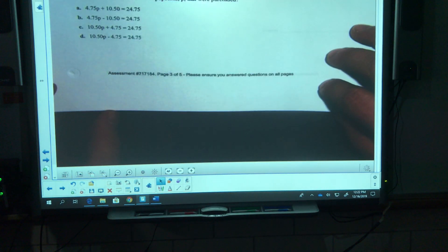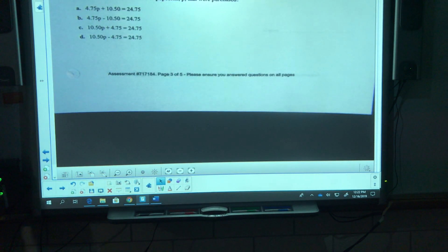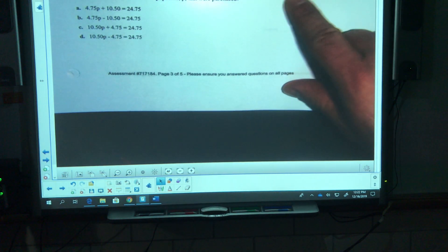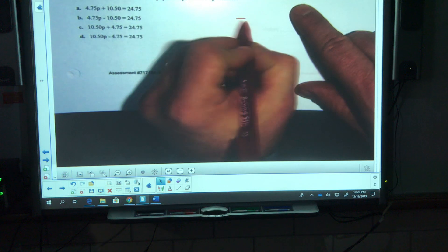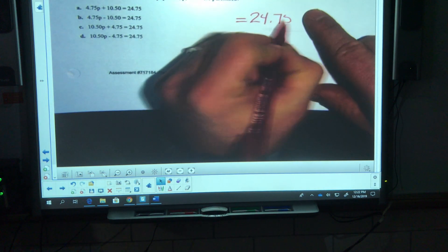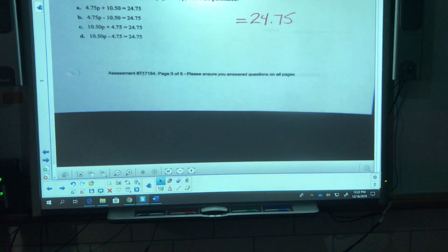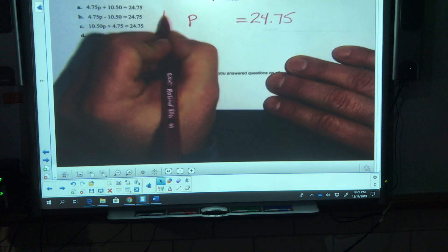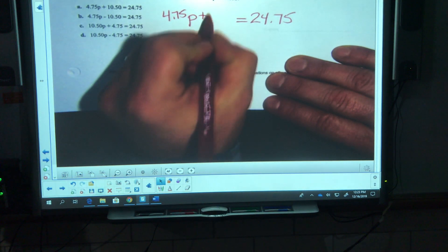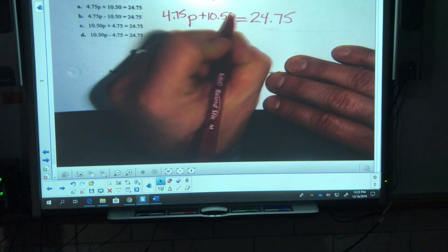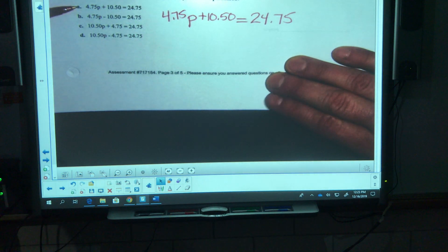Number 11, Carmen goes to the drive-in movies with some friends. It costs 10.50 for their car plus 4.75 per popcorn. The total amount Carmen and her friends pay for the car and the popcorn is 24.75. Which equation can be used to determine the number of popcorns? p is popcorns, they are 4.75 each and she has to pay for the car.